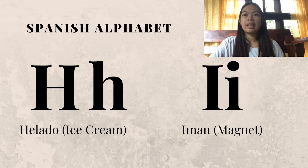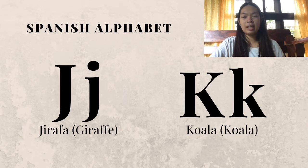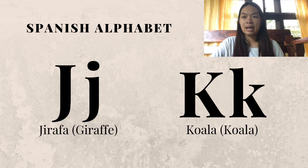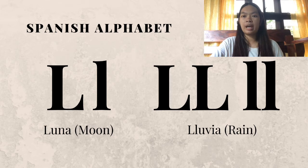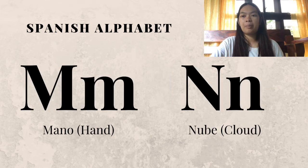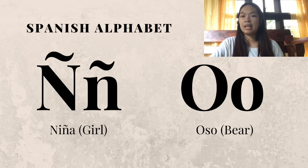I — Iman. J — Jirafa. K — Koala. L — Luna. Ll — Lluvia. M — Mano. N — Nube. Ñ — Niña. O — Oso.